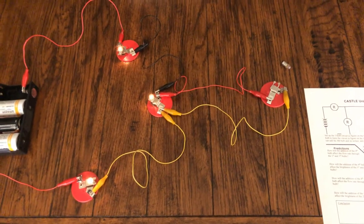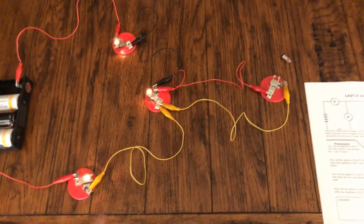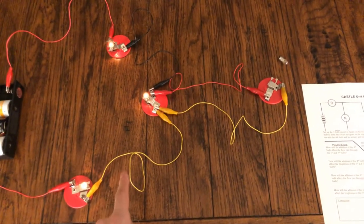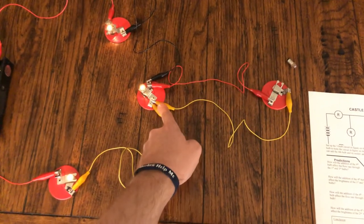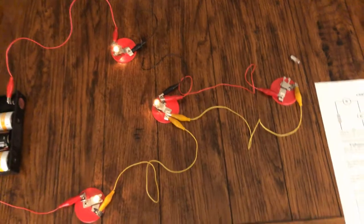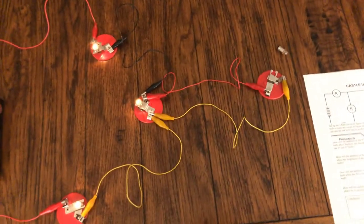So go ahead and color code those, and those hanging wires—since they're connected with no bulb in between them, this wire and this wire—they must be the same color as well.